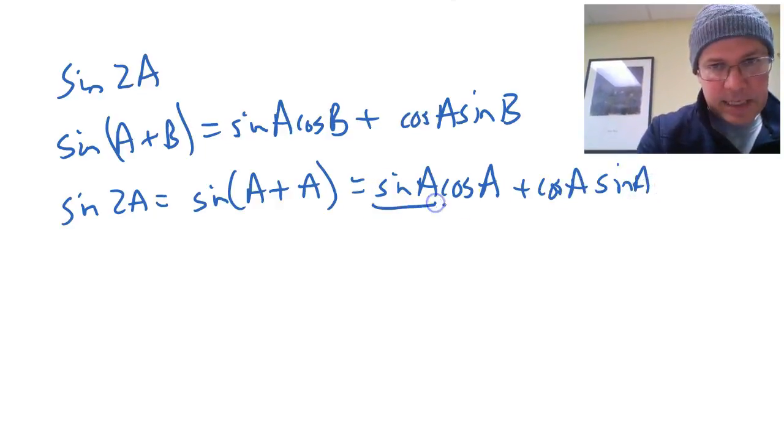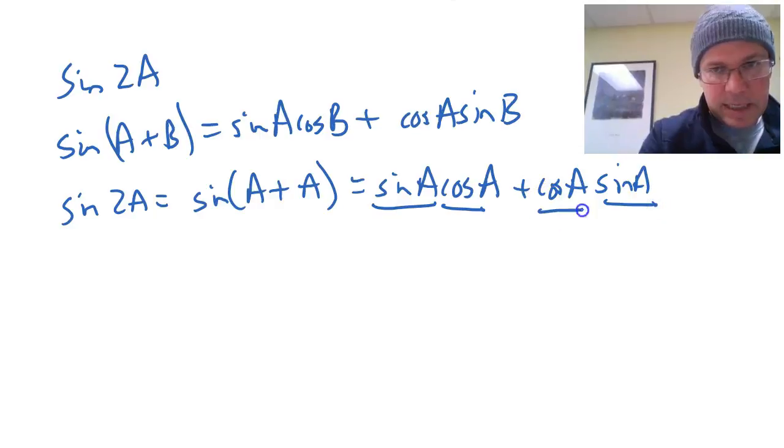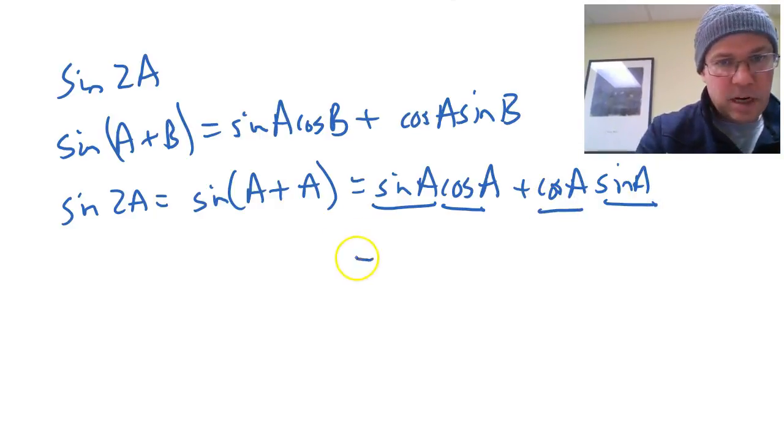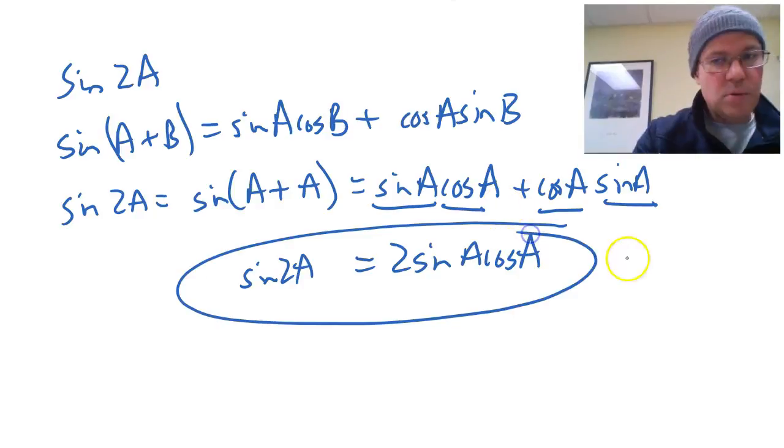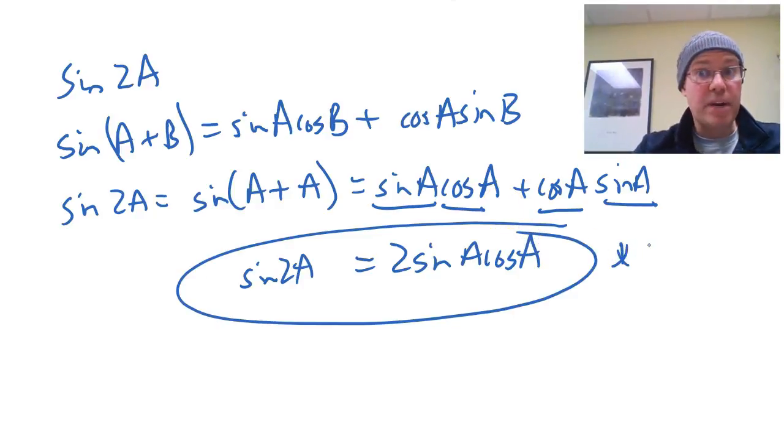Now interestingly, sin A times cos A is the same as sin A times cos A. So what I've really got is two sin A cos A's, and there we have it. There's the formula for sin 2A, and there's only one of them. So it's the cos 2A formula where you've got the three.